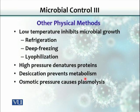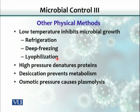There are other physical methods beyond dry heat and moist heat. Low temperature inhibits microbial growth — food kept in the fridge can stay safe for about two days, and in a deep freezer it can last for weeks and months. Lyophilization is another physical method where we freeze the sample and then remove its moisture. Lyophilized items can stay for months, preferably refrigerated, extending shelf life.